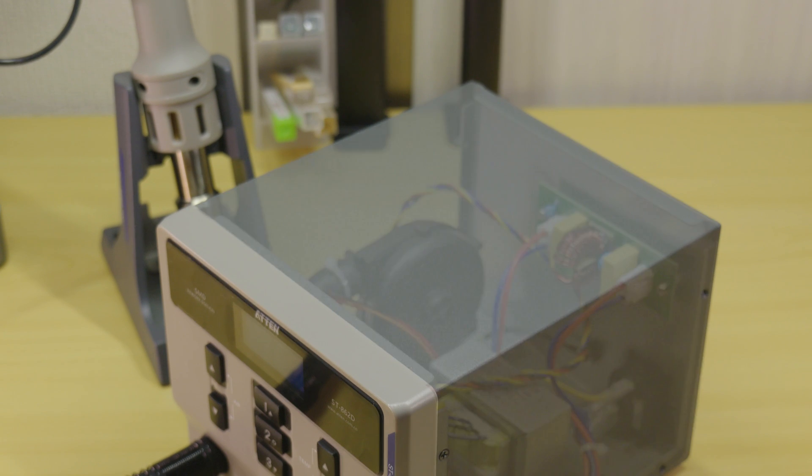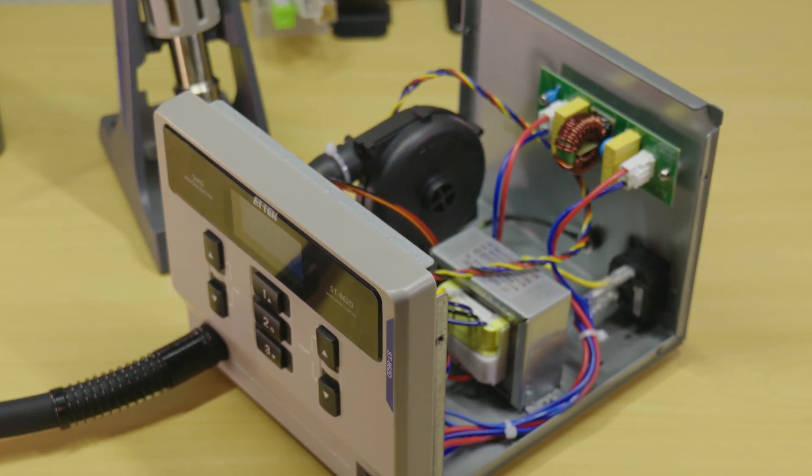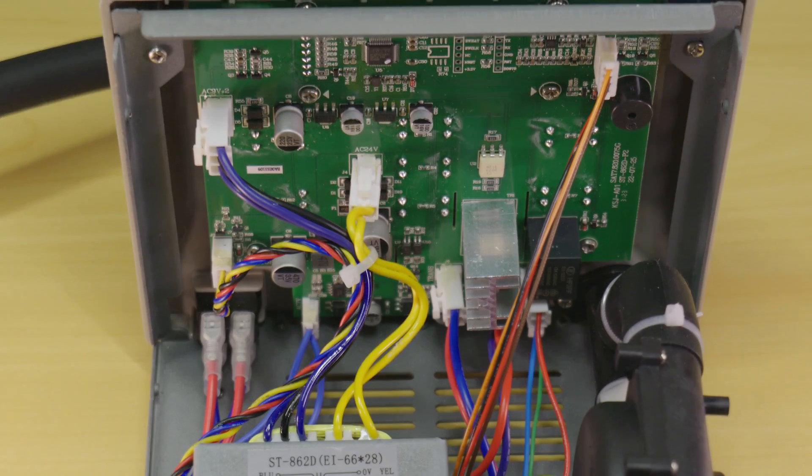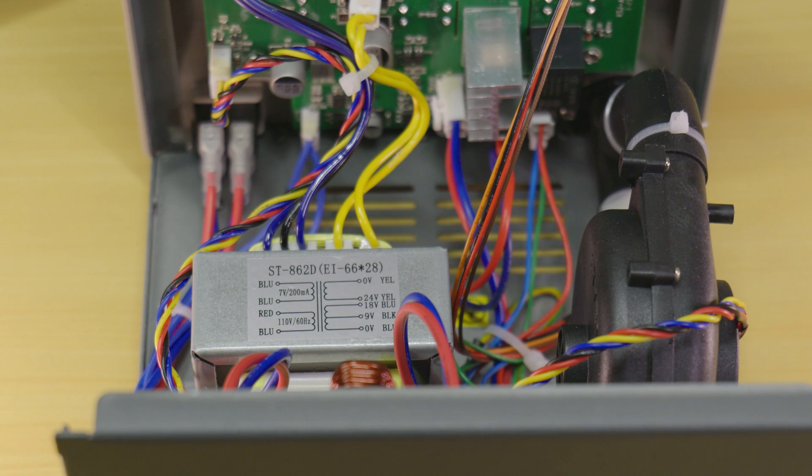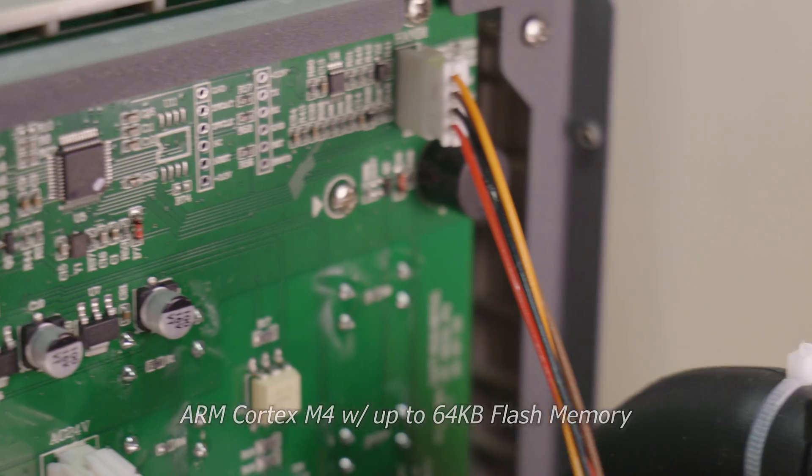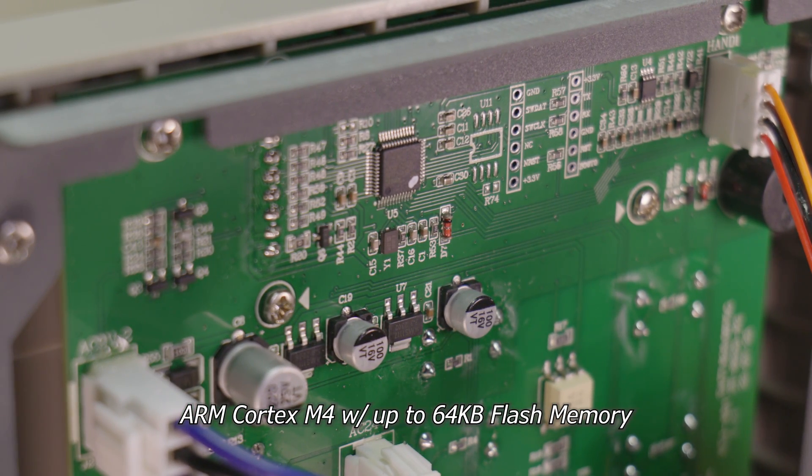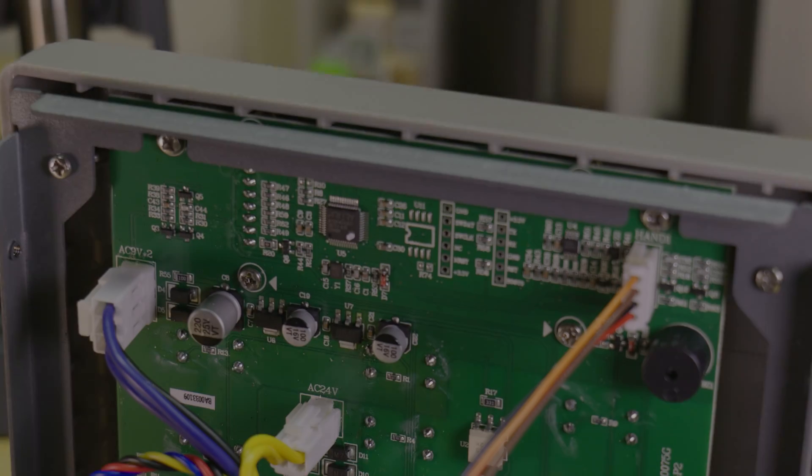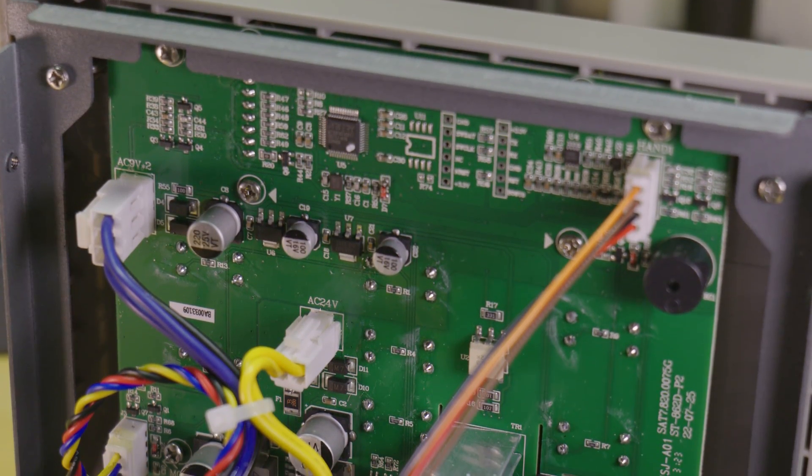Looking closer inside the station, the 862D is fitted with a standard 3-pin IEC C13 socket, which is connected to both the heater core control section and a small transformer for powering the machine's logic. The brains at the heart of this operation is a microcontroller which oversees all functions of the main unit. Build quality is pretty typical for this price point and is acceptable.